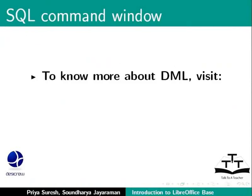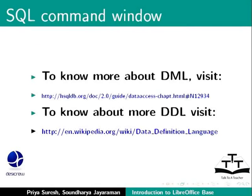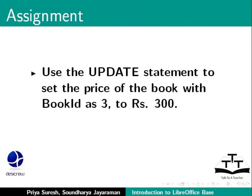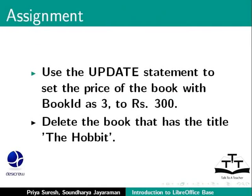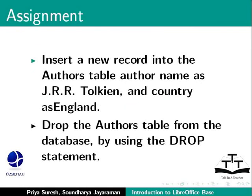To know more about DML, visit the website shown on the screen. To know more about DDL, visit the Wikipedia website shown on the screen. Here is another assignment for you: Use the UPDATE statement to set the price of the book with Book ID 3 to Rs. 300. Delete the book that has the title The Hobbit. Insert a new record into the Authors table with Author name as J.R.R. Tolkien and Country as England. Drop the Authors table from the database using the DROP statement.